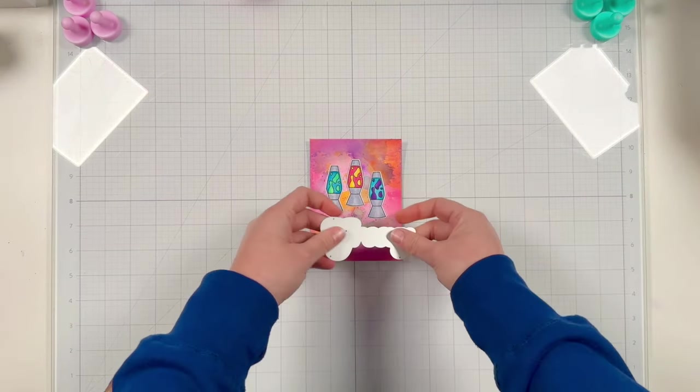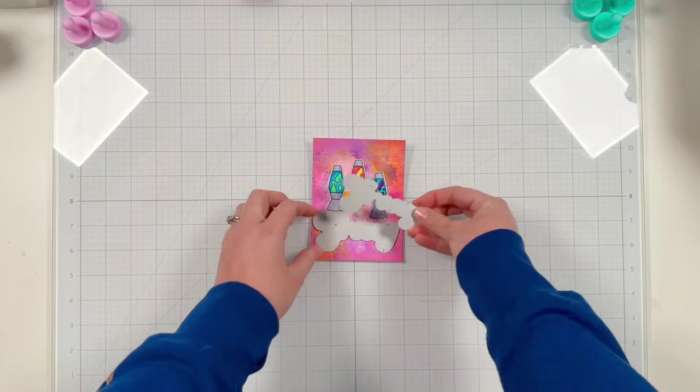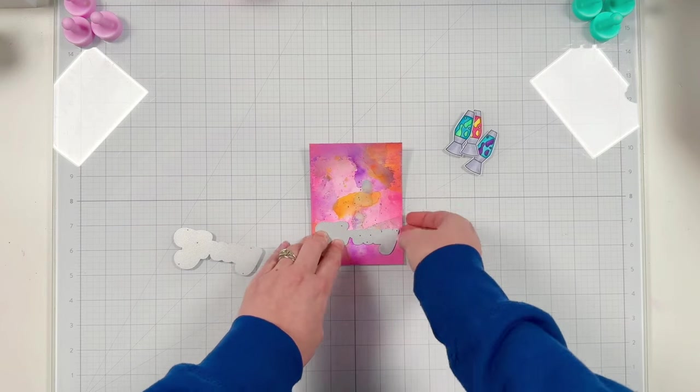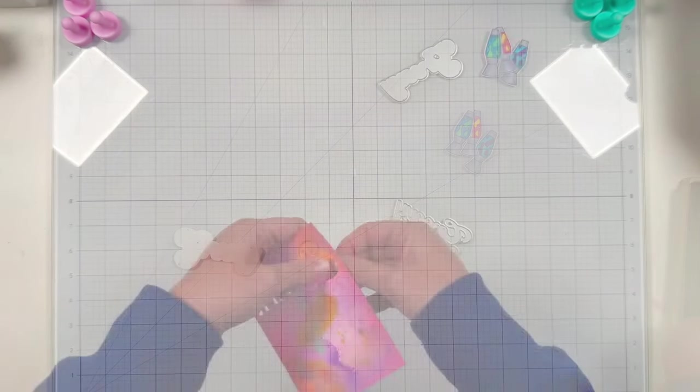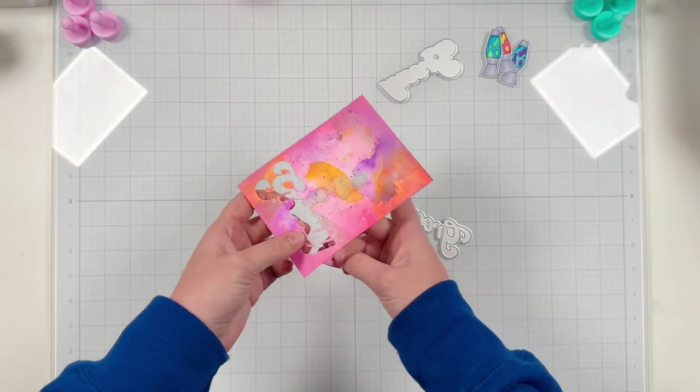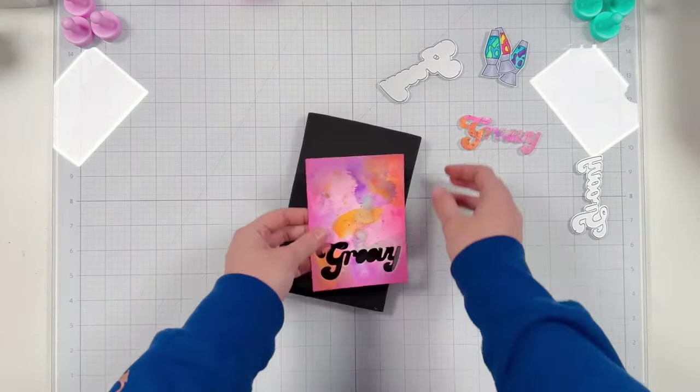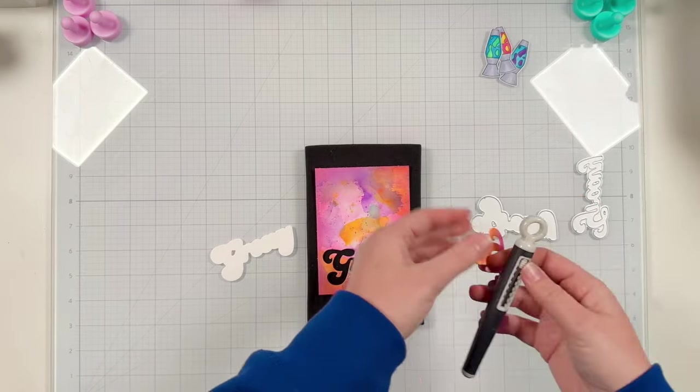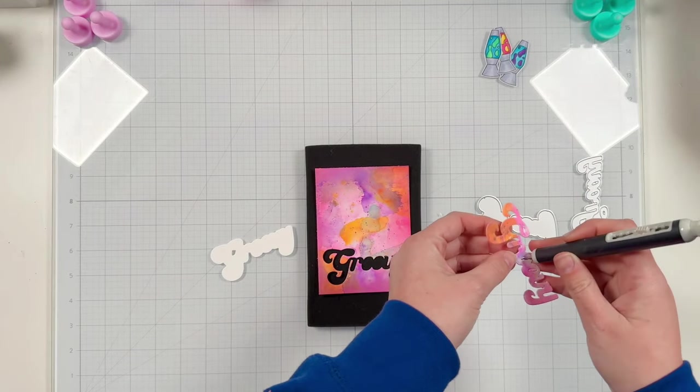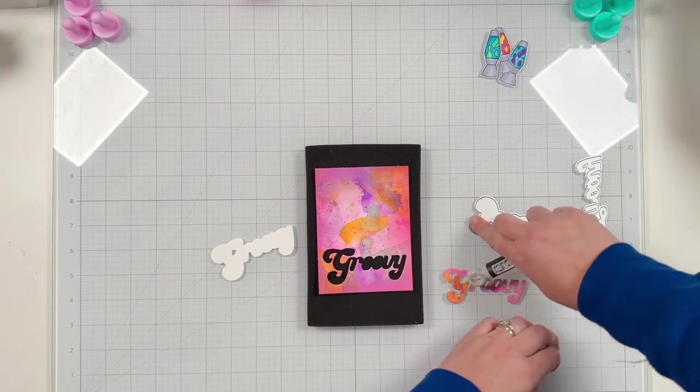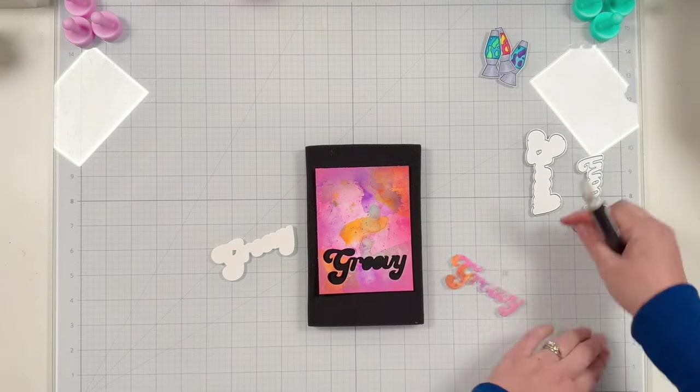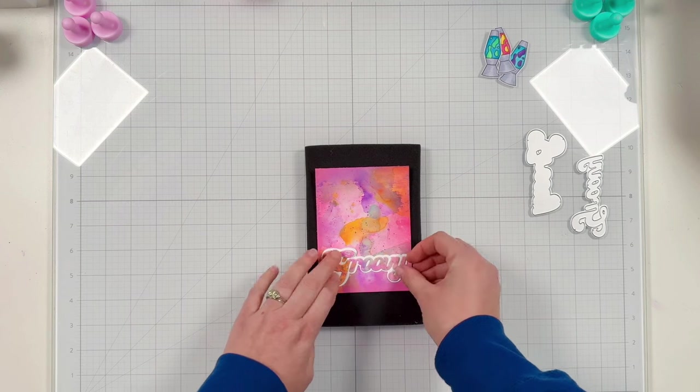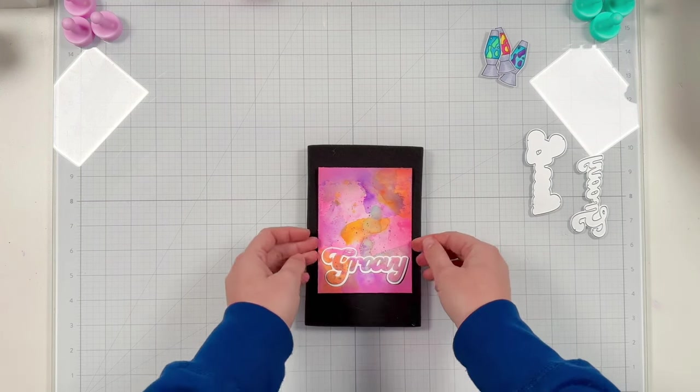I am just going to use the groovy sentiment. There is a word die and a shadow die and I'm going to use the word die and cut it out directly out of this panel. I'm still going to use this ink blended panel on my card as is because I will use the shadow die in white which is larger than the word die, so when I layer my sentiment back onto this panel it's going to cover what I've already die cut because of that white shadow border.